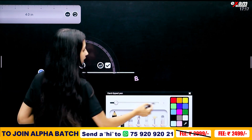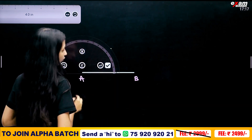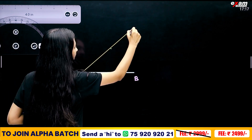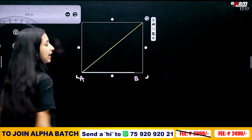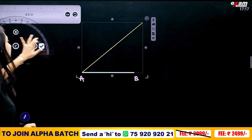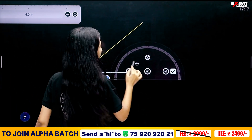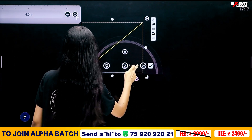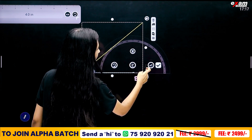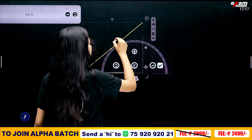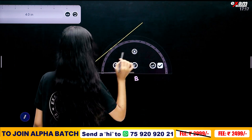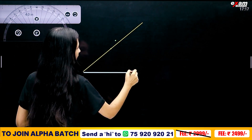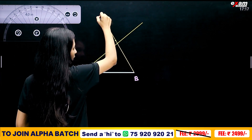If we place the protractor, we mark 40 degrees. Now we set the protractor block at B and mark 60 degrees.